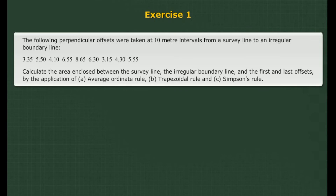Solved problem: The following perpendicular offsets were taken at 10-meter intervals from a survey line to an irregular boundary line. Calculate the area enclosed between the survey line, the irregular boundary line, and the first and last offsets by the application of: A. Average Ordinate Rule, B. Trapezoidal Rule, and C. Simpson's Rule.